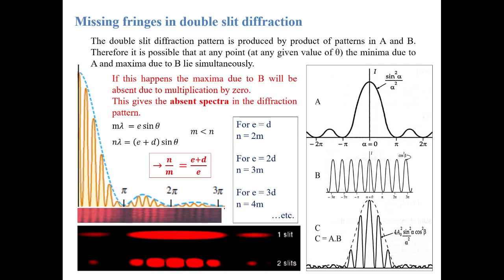This is the example of single slit — this is the principal maxima, this is the first secondary maxima on both sides, and this is the minima due to single slit. In the double slit pattern, the envelope from the principal maxima region contains 5 maxima due to interference. This is the 0th order maxima, this is first order, this is second order, and the third order maxima is absent from this pattern. This is possible only if the slit width e is half of the separation d between the two slits in this case.